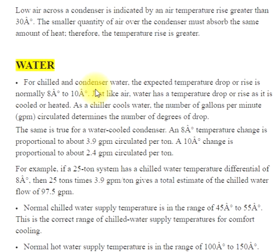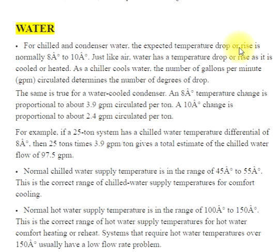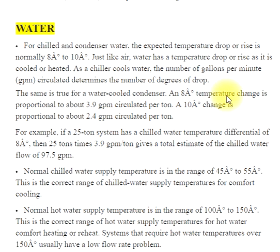For chilled water and condenser water, the expected temperature drop or rise is normally 8° to 10°. Just like air, water has a temperature drop or rise as it is cooled or heated. As a chiller cools water, the number of gallons per minute circulated determines the number of degrees of drop. An 8° temperature change is proportional to about 3.9 GPM per ton; a 10° change is proportional to about 2.4 GPM per ton.